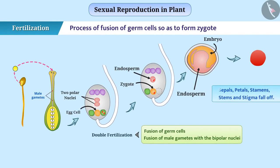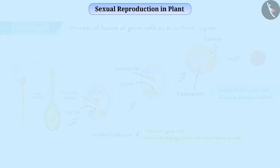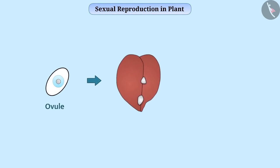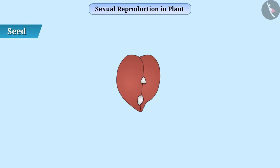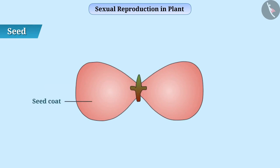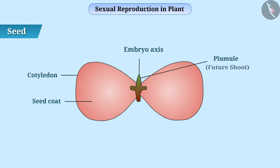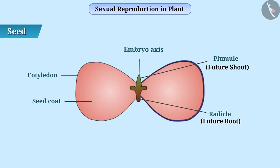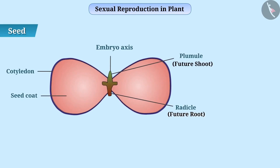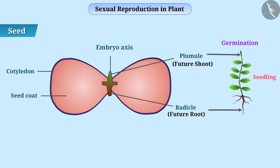During this, other parts of the flower like sepals, petals, stamens, and stigma fall off. The ovule undergoes transition into a hard covering called a seed, which protects the embryo. A seed consists of a seed coat, cotyledon, and an embryo axis. The plumule of the embryonic axis is the future shoot and the radicle is the future root. Cotyledons are inflated structures in which food for the embryo is preserved. In favorable conditions, the embryo develops into seedlings — which we call germination — and the newborn plant grows into a new plant.